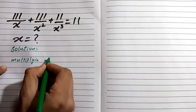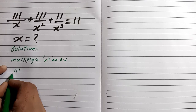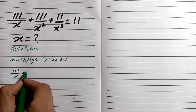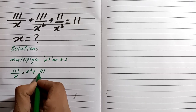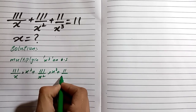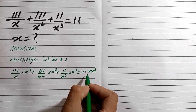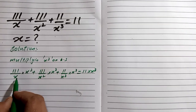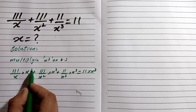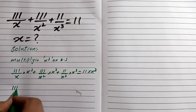We are multiplying x^3 on both sides. On this side we have 111 divided by x, multiplied by x^3, plus 111 divided by x^3 multiplied by x^3, which is equal to 11 multiplied by x^3. On this side we have only one power of x and three power of x, so this will reduce to one power of x, and two powers will be cancelling.